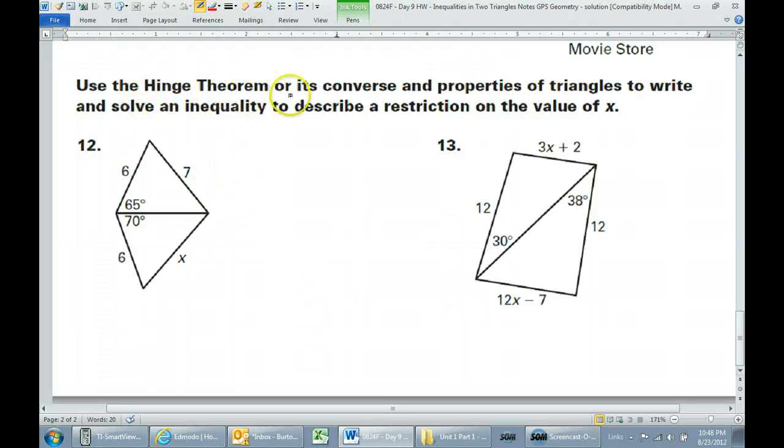So the hinge theorem and its converse boils down to the following. If you have two pairs of sides that are congruent, the bigger angle is across from the bigger side.